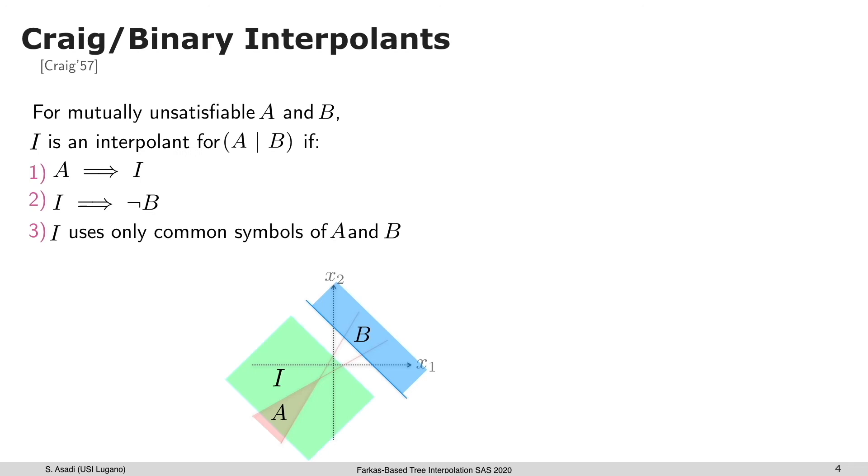The question is how to end up with such over-approximations. We are using Craig interpolation, also known as binary interpolation. The idea is if you have a mutually unsatisfiable formula A and B, the interpolant is the third formula I such that it over-approximates fragment A but is unsatisfiable with formula B. After proof of unsatisfiability using different binary interpolation algorithms, we can compute different interpolants.